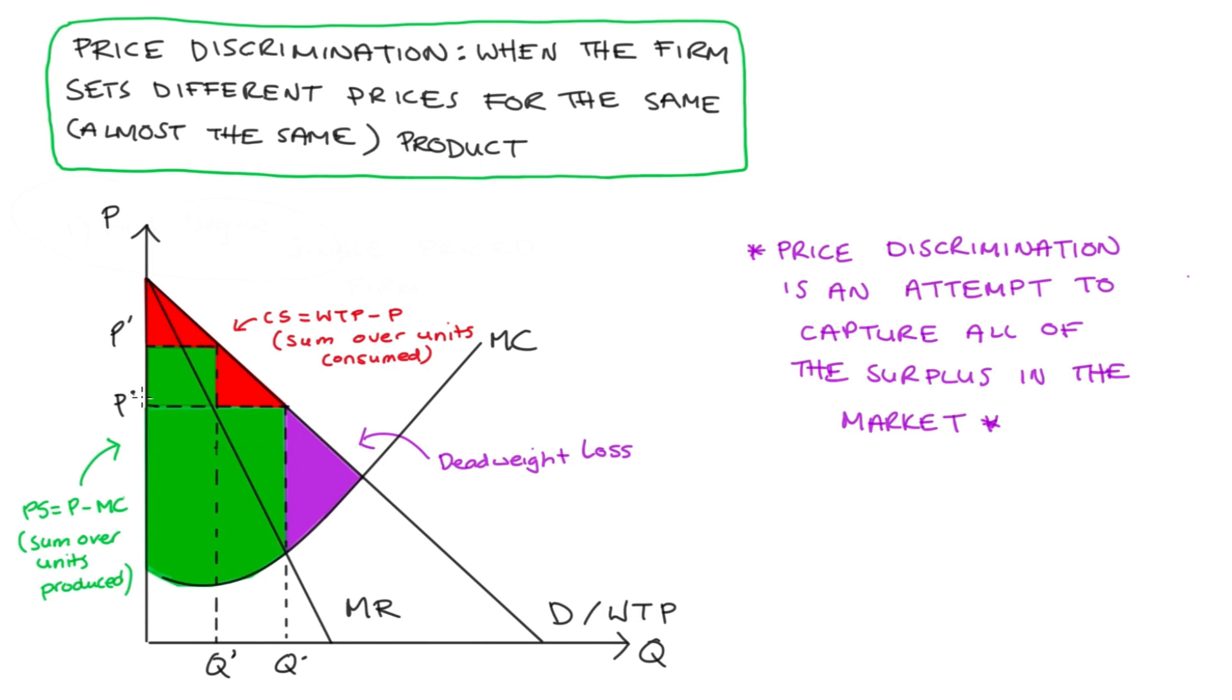Now, down in this area, that's dead weight loss. If we price discriminate, the firm can charge these guys a lower price and get some more surplus that way. So perhaps we introduce another price like P prime prime. So all of the consumers in this part of the demand curve now will pay P prime prime. And we get to sell some additional units here, the units from Q star to Q prime prime, and they're being sold at P prime prime.